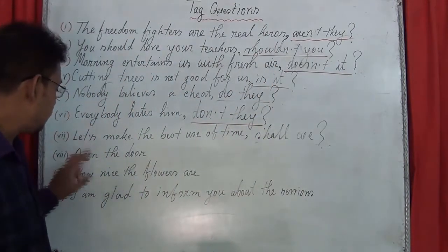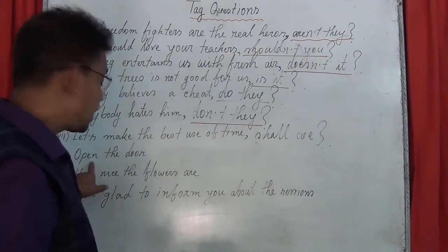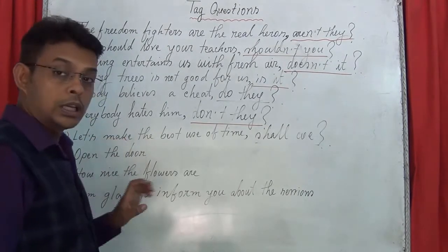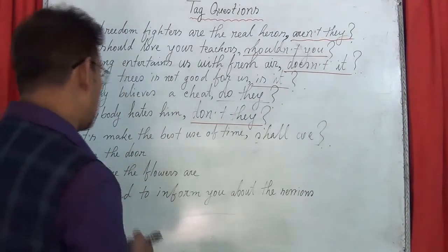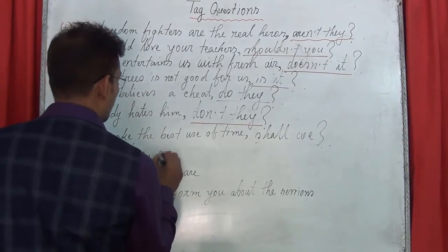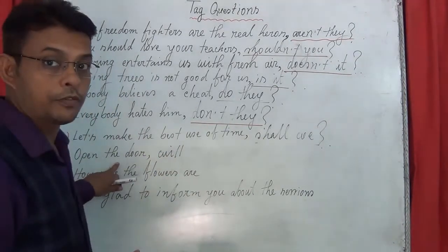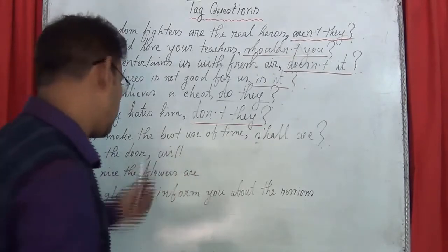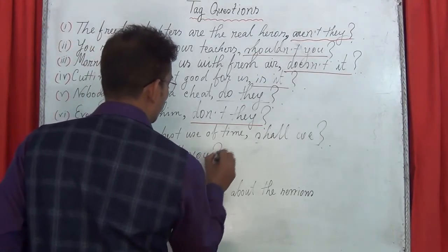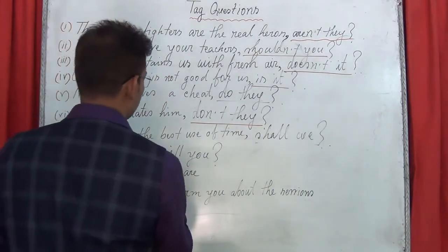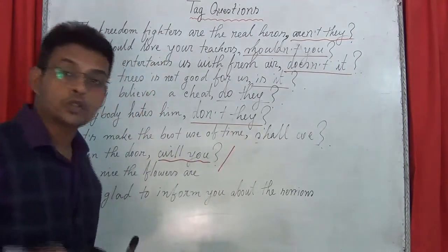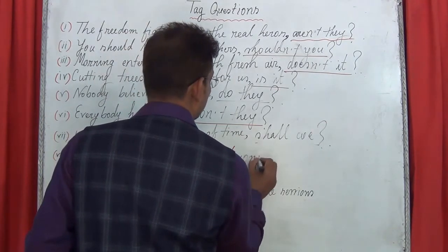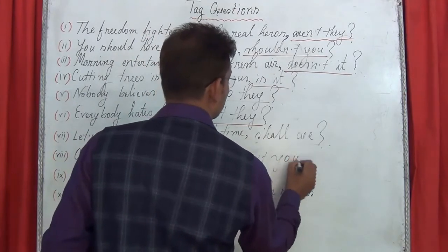Next: 'Open the door.' At the beginning of the sentence you see 'open' — very important. In an imperative sentence like this, you have to use the auxiliary 'will.' Add a comma, then 'will.' The sentence is affirmative, but you can use either the negative or affirmative form in the tag. The pronoun is 'you.' So the tag can be: 'will you?' or 'won't you?'